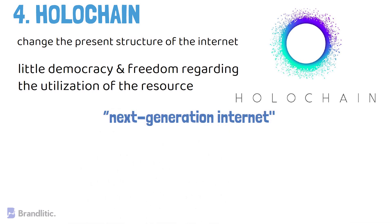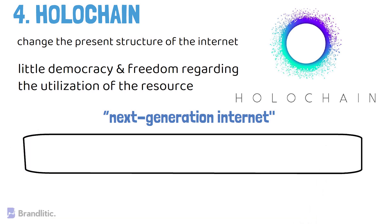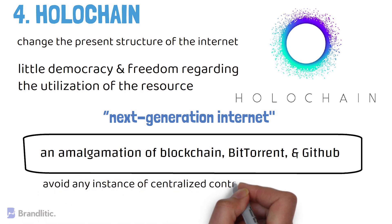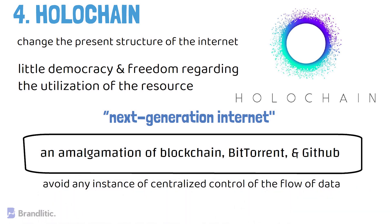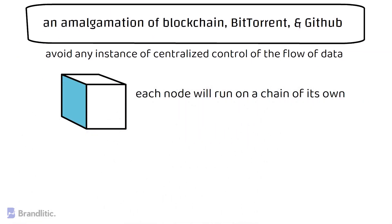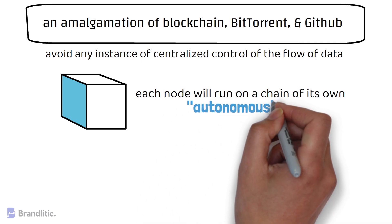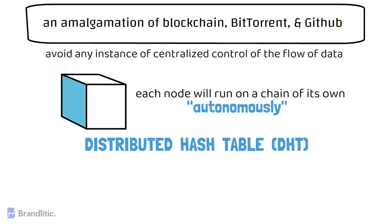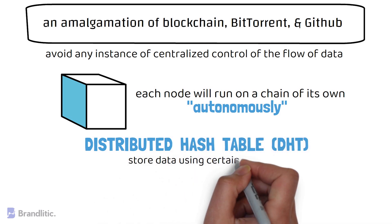In light of this, holochain wants to create a distributed network that can also be the basis of the next-generation internet. According to its white paper, holochain is an amalgamation of blockchain, BitTorrent, and GitHub — a DLT that distributes power among nodes to avoid any centralized control of data flow. Each node runs on a chain of its own, giving miners and nodes the freedom to operate autonomously.